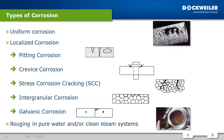Stress corrosion cracking is a combined effect of tensile stress and a corrosive environment, again caused by chloride-containing solutions, like pitting and crevice corrosion. Intergranular corrosion can also occur in stainless steels, although they are highly alloyed. It is a preferential corrosion of the grain boundaries and may occur due to chromium carbide or intermetallic phases in the surface area.